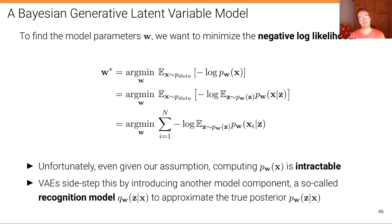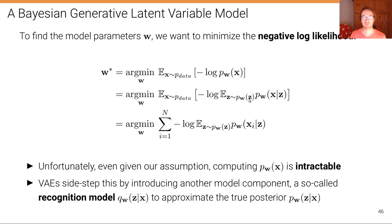Unfortunately, given our assumptions, computing P_w of X is still intractable. This expectation is intractable because the search space is too high-dimensional — we may be operating on a 60-dimensional latent space. To properly estimate that quantity, we need to draw too many samples, far too many for making a single gradient step. So it's intractable.